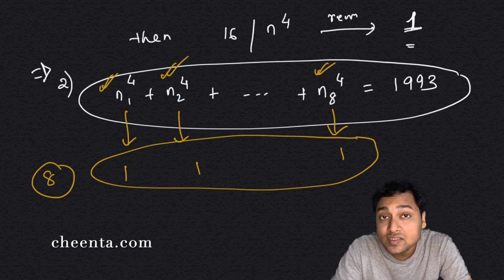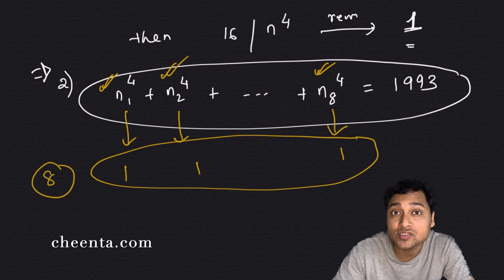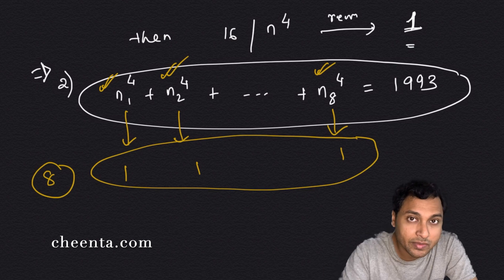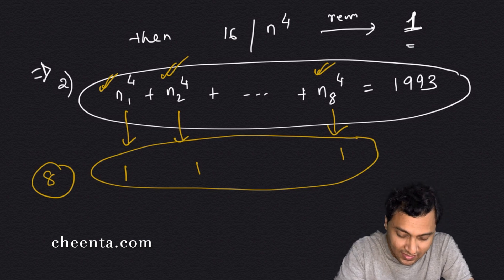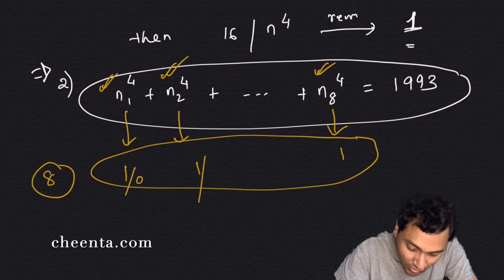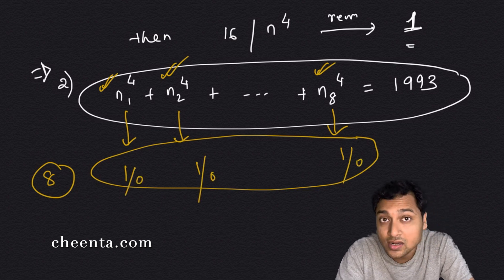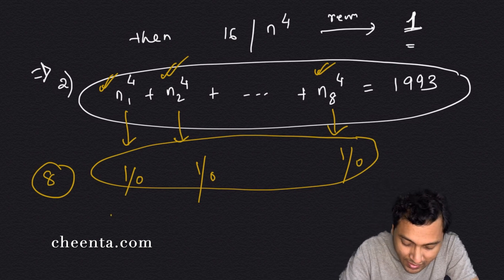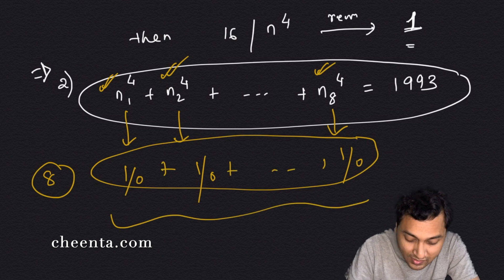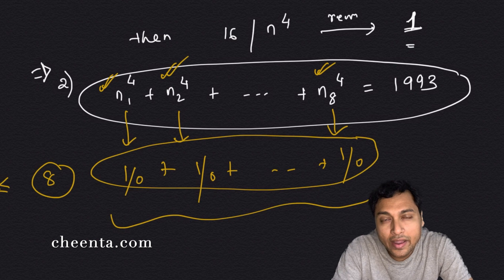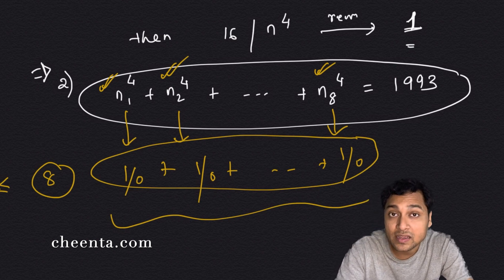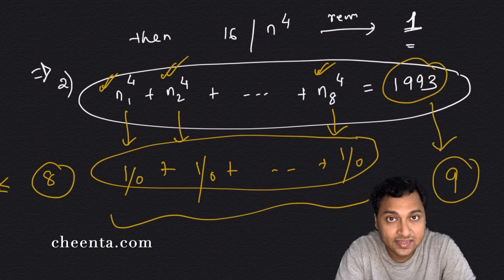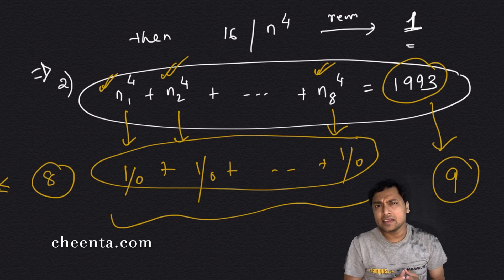If any of these integers is even, its fourth power produces remainder 0 when divided by 16. So each fourth power produces remainder either 1 (if odd) or 0 (if even). The sum of remainders is therefore at most 8. But 1993 gives remainder 9 when divided by 16. So the second part is solved by checking modulo 16.